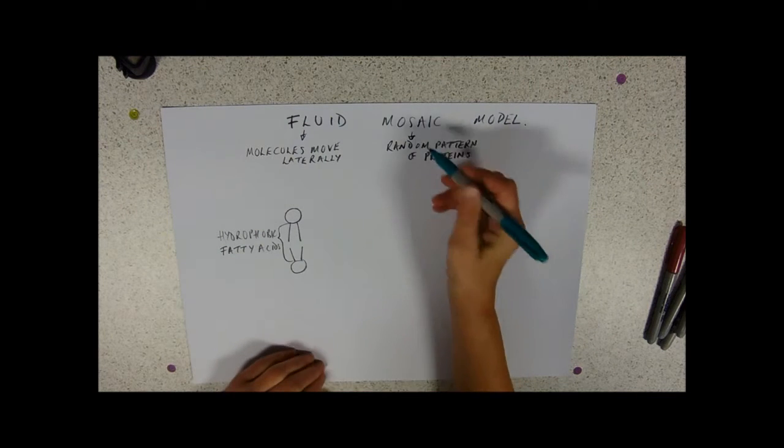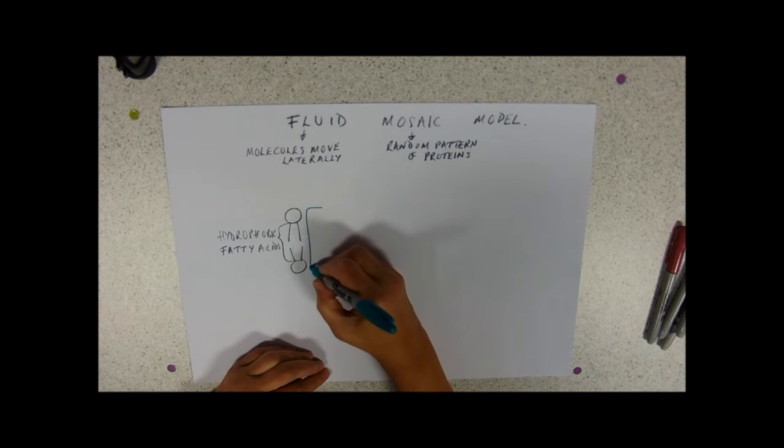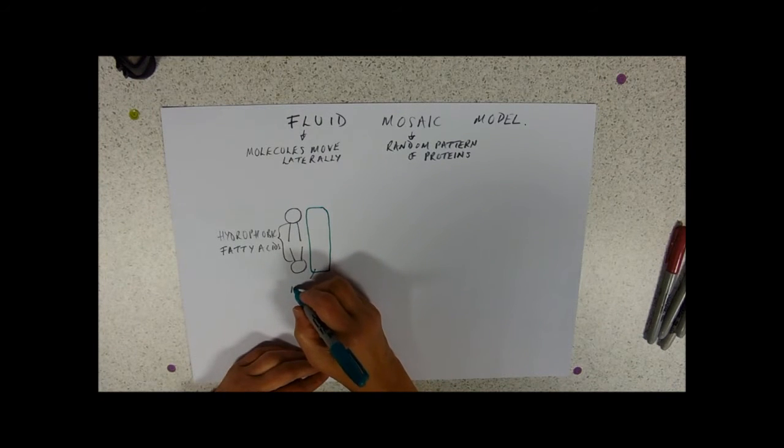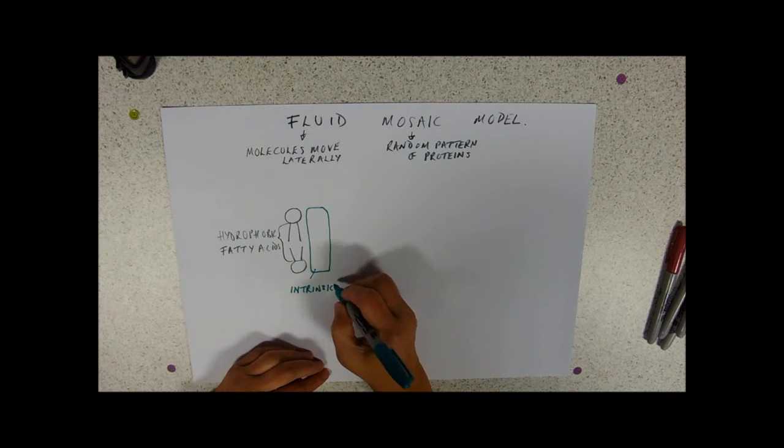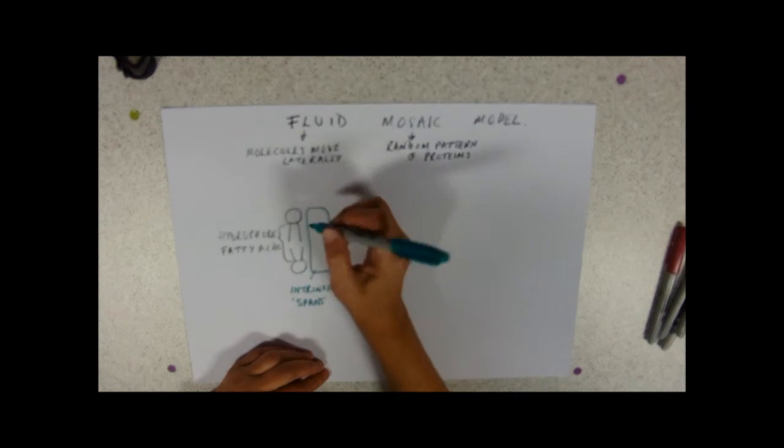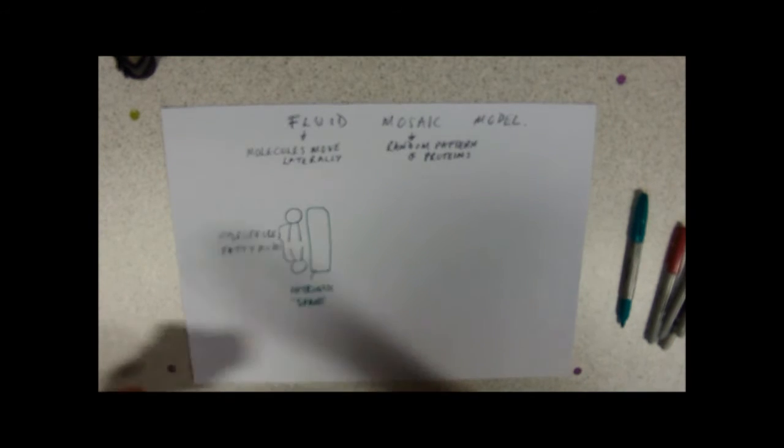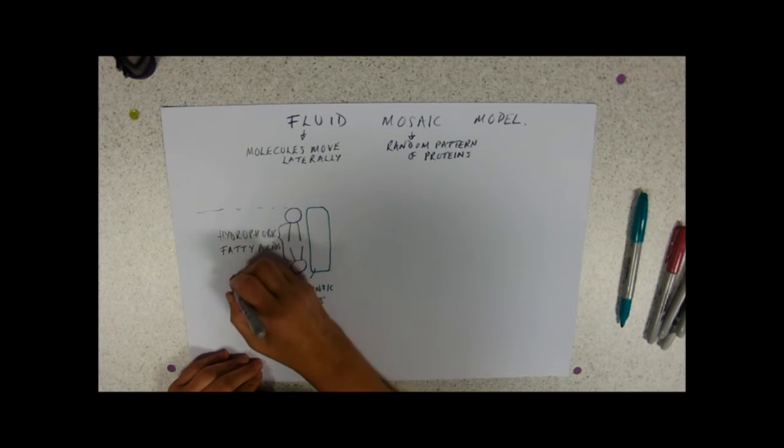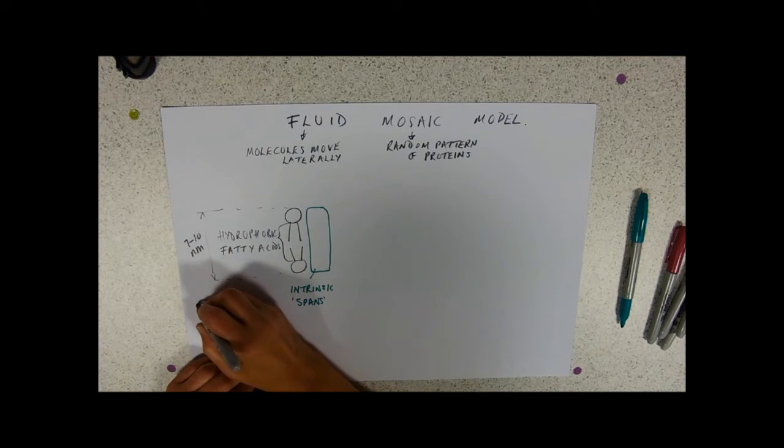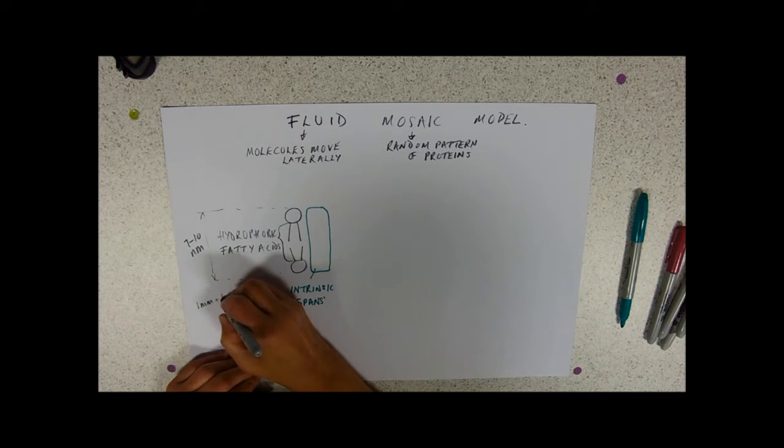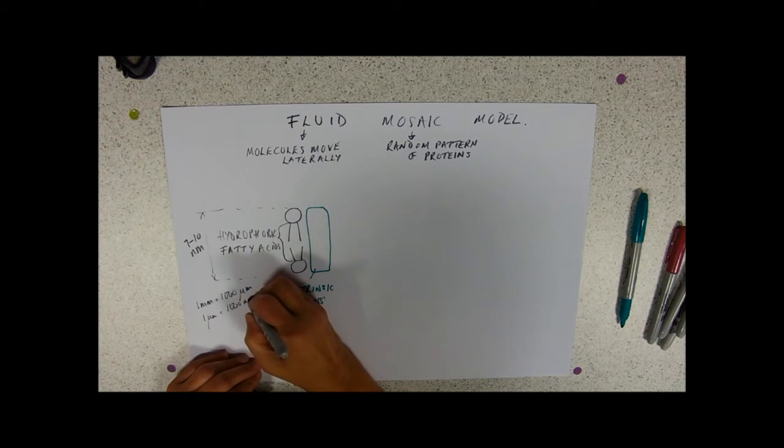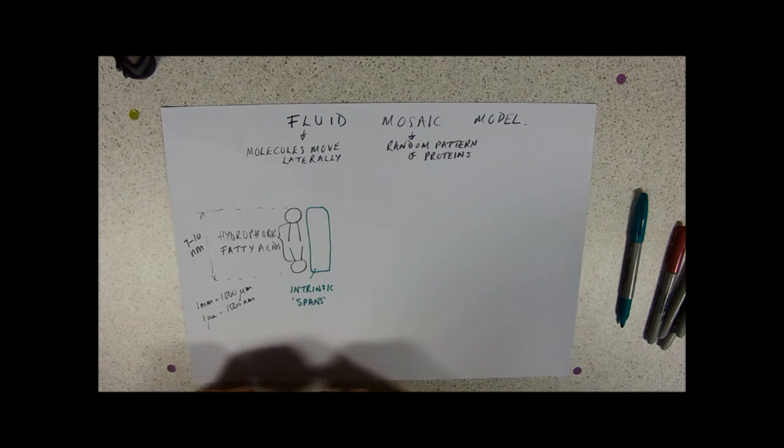So, embedded in, so this is the mosaic, embedded into this are various proteins. So, I'm just going to draw this one. This one goes all the way across. So, this is an intrinsic protein, which spans the membrane. The membrane itself is about, from sort of top to bottom. So, if you were to measure it, it's probably about between 7 and 10 nanometers, remembering that 1 millimetre equals 1,000 micrometres, 1 micrometre equals 1,000 nanometres. So, it's small, and that's why it looks like a line on electron micrographs.